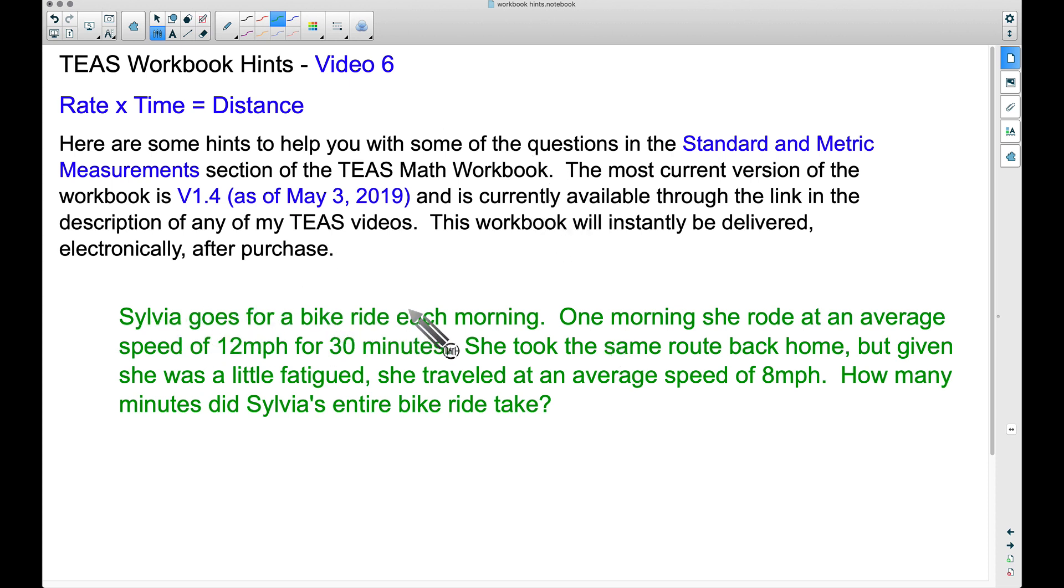So Sylvia goes for a bike ride each morning. One morning she rode at an average speed of 12 miles per hour for 30 minutes. There's a rate, there's a time, but let's be careful right here in a moment. She took the same route back home, but given she was a little fatigued, she traveled at an average speed of 8 miles per hour. How many minutes did Sylvia's entire bike ride take?